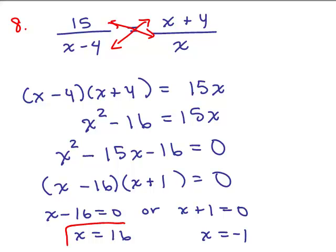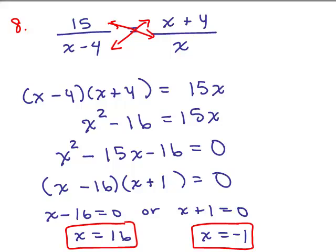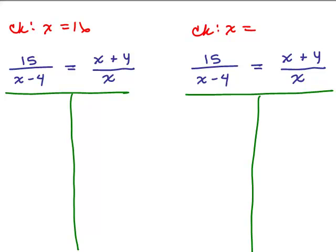Now we want to check to make sure both of these is really the right answer. So we're going to check it back in the original problem up here. The original problem was 15 over x minus 4 equals x plus 4 over x. We have to check each solution separately. First, let's check 16.